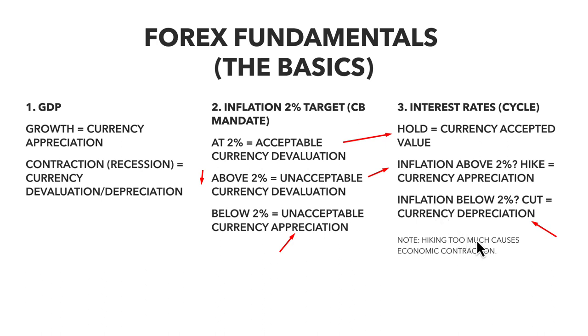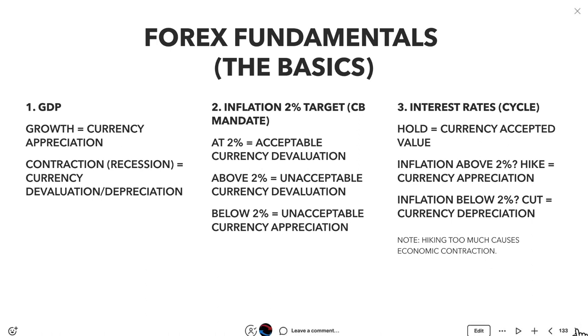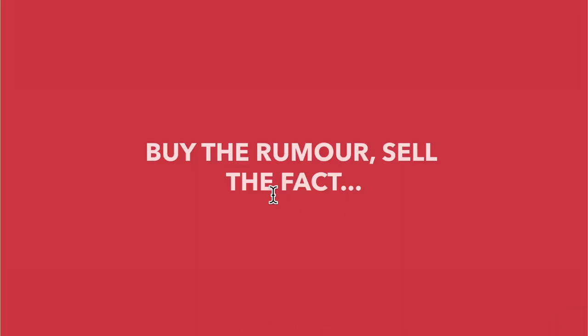Hiking too much causes economic contraction, because hiking interest rates raises borrowing and lending costs. If you're a business or homeowner, your mortgage payments go up when the central bank hikes. You have less money in your pocket as outgoings rise, and that has a knock-on effect on spending in the economy. It's also important to understand that in currency trading you're looking to buy the rumor, sell the fact — buy low, sell high.